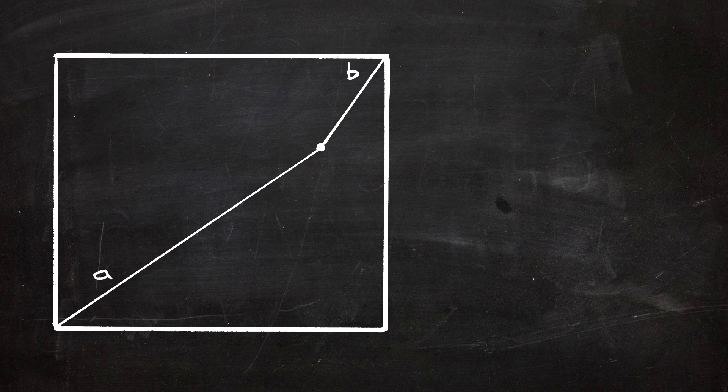I'm going to talk about the British flag theorem. There is such a thing, and the idea is you start with a rectangle, and somewhere you add a point. Connect that point to two opposite corners, and we'll call these diagonals A and B, and then connect the point to the other two opposite corners, and we'll call these diagonals C and D.